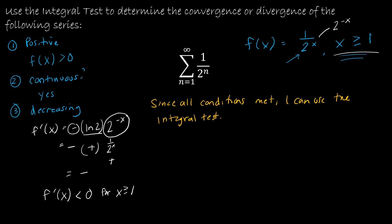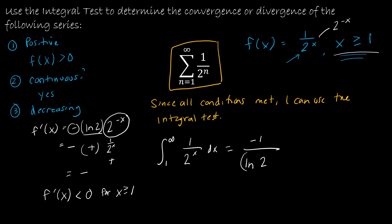The integral test says the series converges or diverges in the same way as the integral from 1 to infinity of 1/2ˣ dx. Integrating gives −1 over (ln(2) · 2ˣ) evaluated from 1 to infinity. If you don't remember this rule for integrating exponential functions, go back to your Calculus 1 notes or find a reference sheet with common derivatives and integrals — you'll find this pattern there.